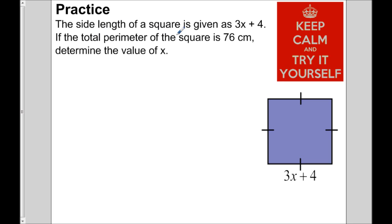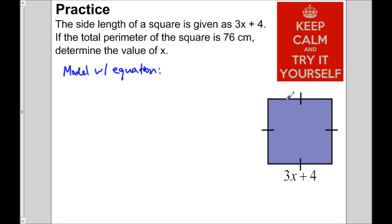Let's try this question. The side length of a square is given as 3x plus 4. If the total perimeter of the square is 76, determine the value of x. Remember, you want to model the situation with an equation. Come up with an equation where the perimeter equals 76, then solve it. Pause the video, give it a shot, and press play when you're ready to look at the solution.